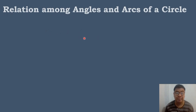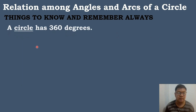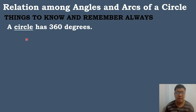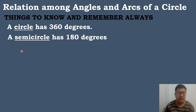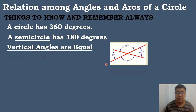We have the following things to know and remember when solving for the central angle and arcs of a circle. The first one is the measure of a circle is always equal to 360 degrees. Then, a semicircle is equal to 180 degrees. And then, vertical angles are equal.